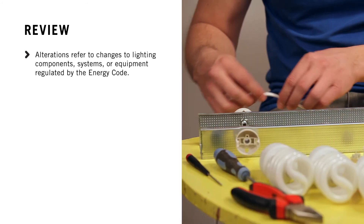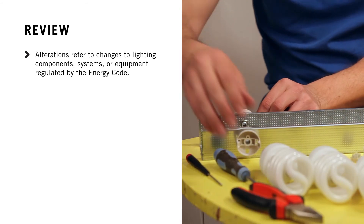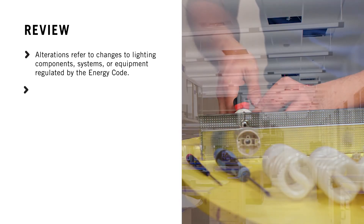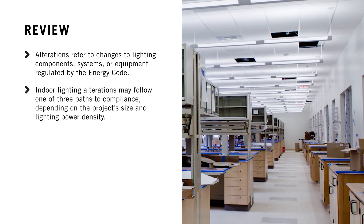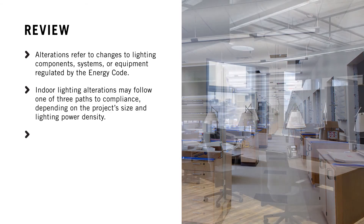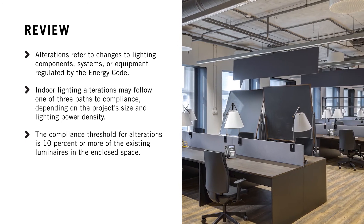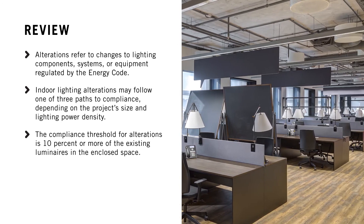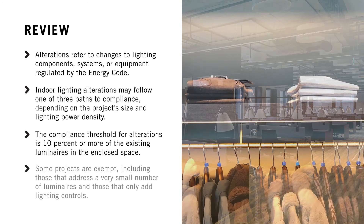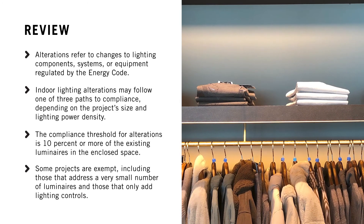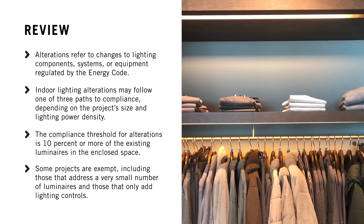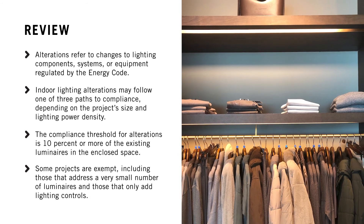Indoor lighting alterations refer to changes to lighting components, systems, or equipment regulated by the Energy Code. Indoor lighting alterations have three paths to compliance. The compliance threshold for alterations is 10% or more of the existing luminaires in the enclosed space. And some projects are exempt, including those that address a very small number of luminaires and those that only add lighting controls.